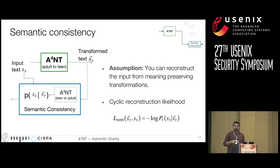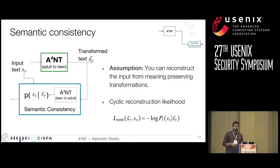However, if you do random transformations which destroy the meaning, you will not be able to reconstruct the original sentence. So we teach ANT to preserve meaning by simply asking it to maximize the likelihood that you can reconstruct the original. This is a cyclic loss: you start from the input, transform it, and then try to reconstruct the original back. Hence it's called a cyclic reconstruction likelihood, and maximizing this encourages ANT to preserve meaning.